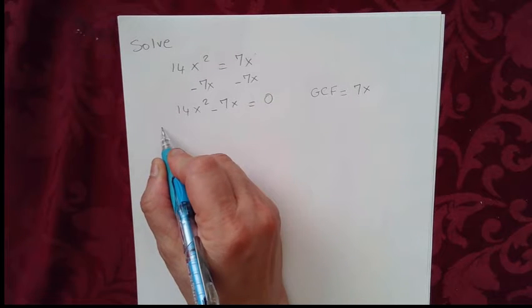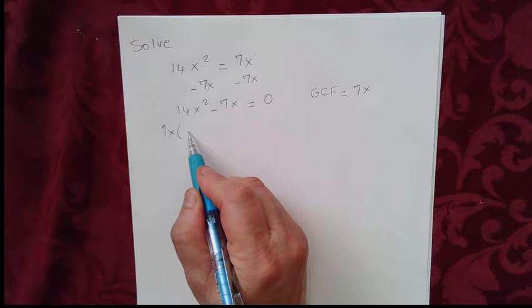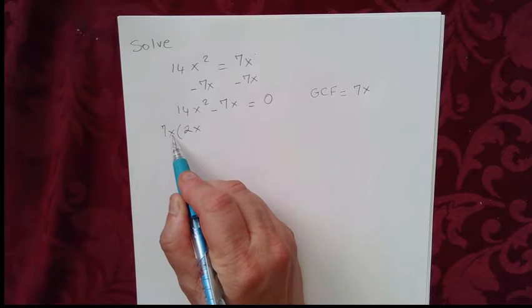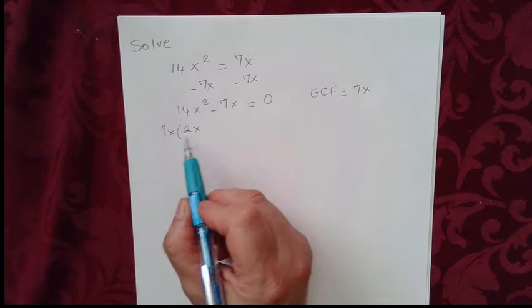So if we factor out 7x, what we get here is 2x, because 7x times 2x gives me 14x squared.